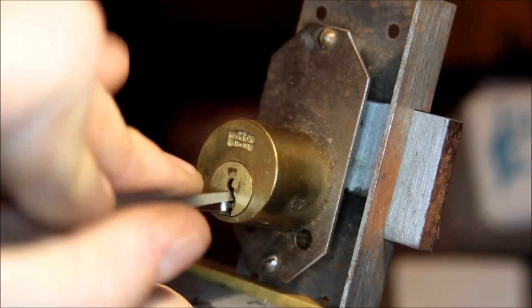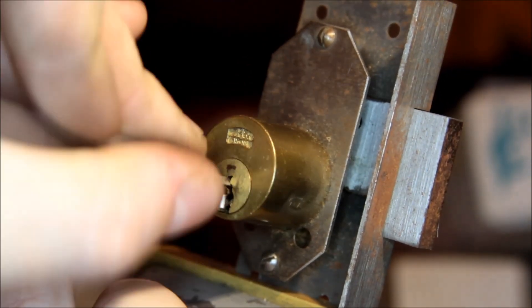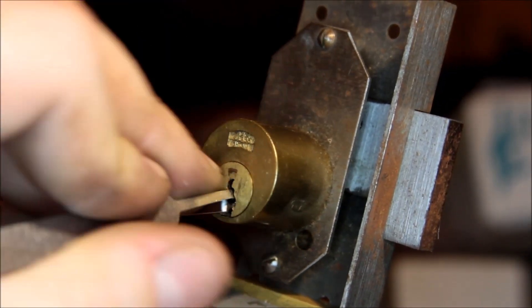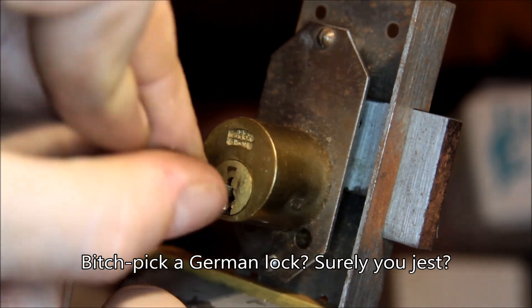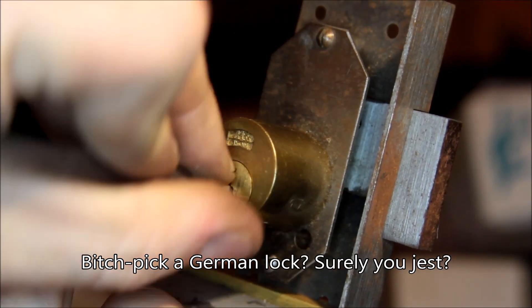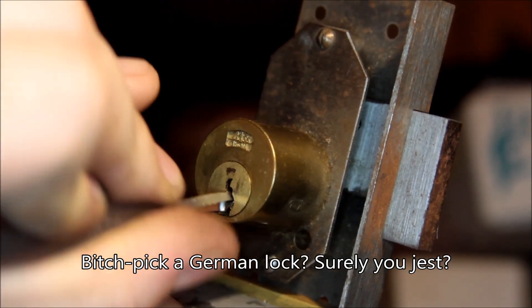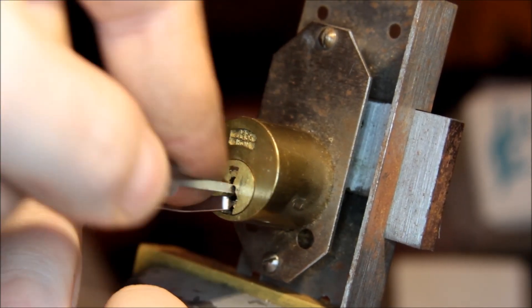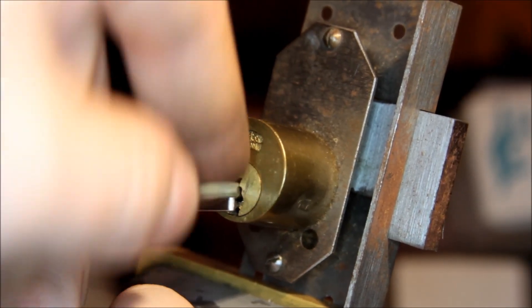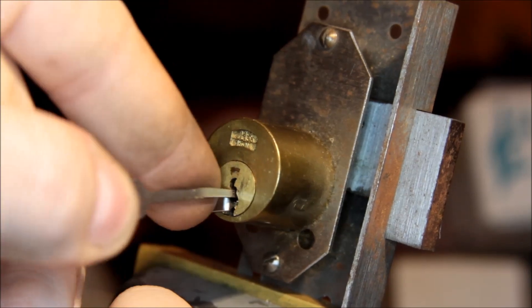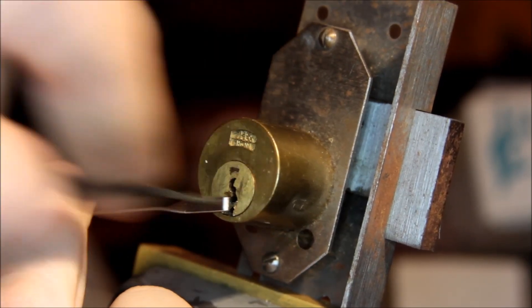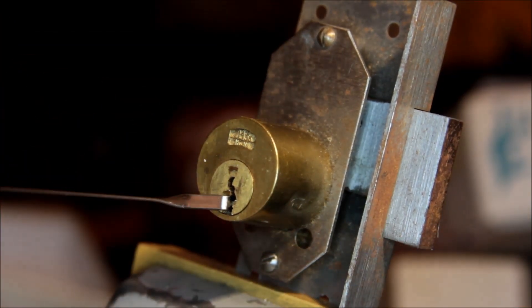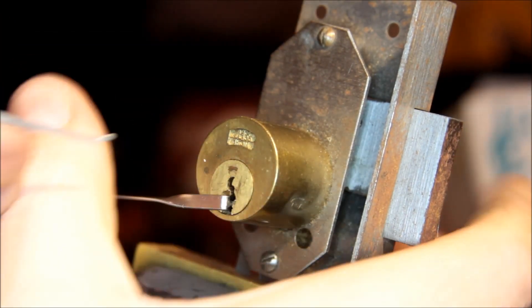Now, let's just try a bitch-pick sort of tack to see if that does anything. I don't know whether I should expect spools or anything in a lock like this. It is German and it is somewhat old, so it might be. But I'm going to go with no on that. So, I think the bitch-pick is out.